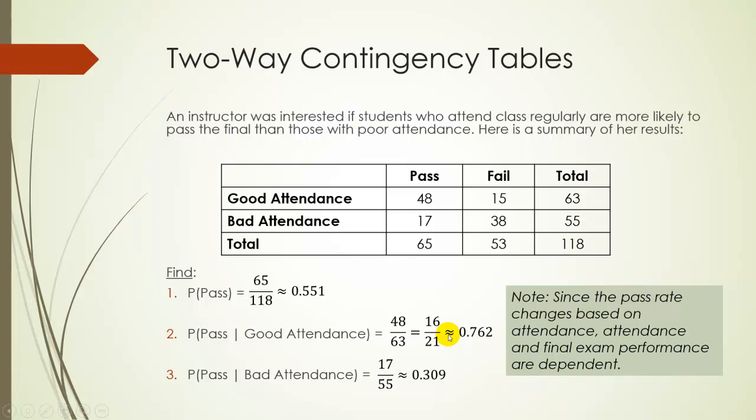So from this since the pass rate changes, in fact it improves if your attendance was good or it gets worse if you have bad attendance. So since it seems like attendance and final exam performance change the probabilities of someone passing then we can say that pass rate and attendance are dependent because the probability of pass given good attendance is not just equal to the probability of passing.